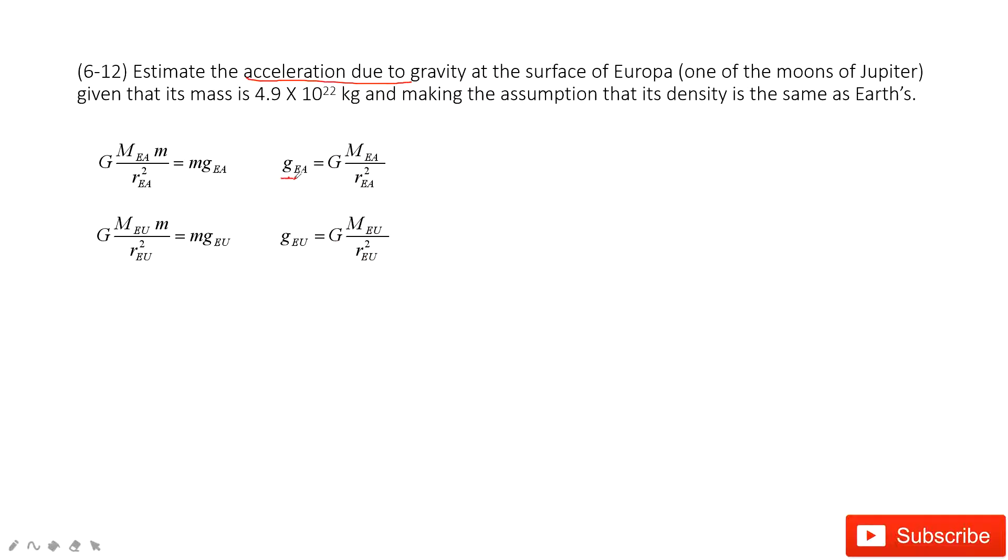Because this one is given, 9.8 meters per second squared, it looks like we can take a ratio to get gEu. So gEu divided by g on the Earth is just in this equation. Now you can see the mass is given. The radius, you don't know.